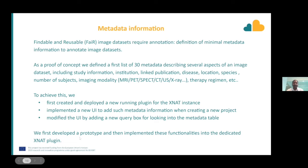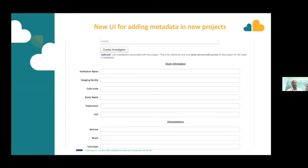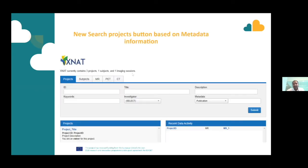We first developed a prototype with these functionalities integrated into a dedicated XNAT plugin. The 30 metadata elements are categorized into study information, demographics, medical, biological, chemical, and imaging. These are key-value pairs — for example, institution with the value 'University of Torino.' All this information is stored when creating a new project. The UI of the prototype is where you fill in all the information, and the home screen of XNAT features an extra metadata plugin that enables searching by category and value.